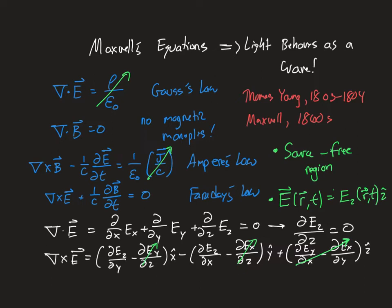We're going to make one more assumption: the electric field is only going to vary along the x direction, not in y or z. This means the remaining term in the z direction of the curl of E goes away because Ez does not depend on y. What we're left with is that the curl of E equals the derivative of the z component of E with respect to x, in the y-hat direction — so curl E = (∂Ez/∂x) ŷ.